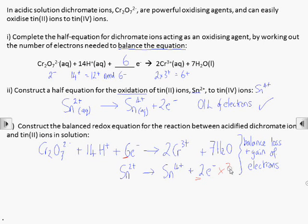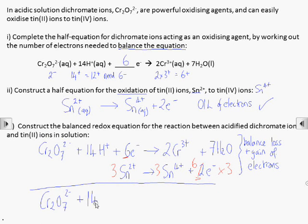So we need to multiply the oxidation reaction by 3 to get 6 electrons released. Now we simply add the two half equations together and the electrons will cancel on each side.